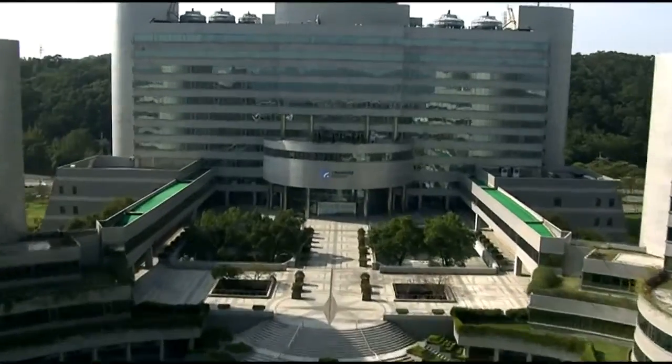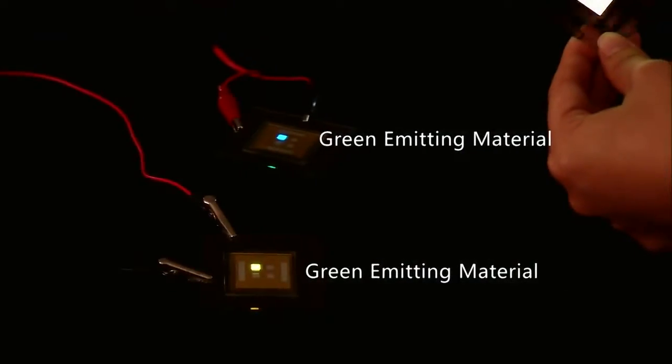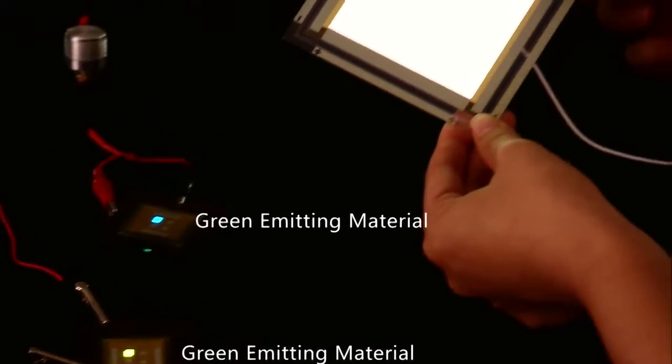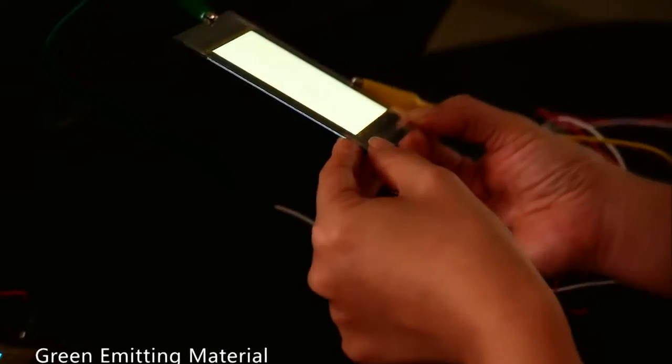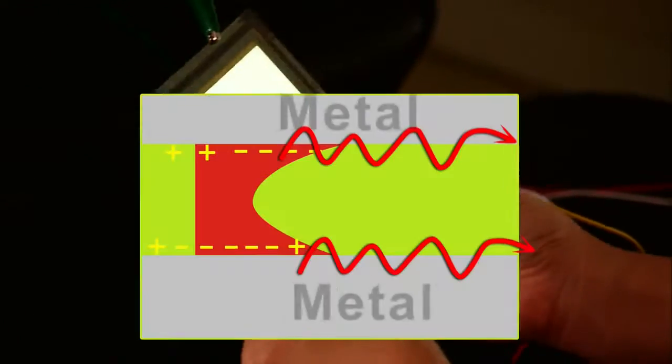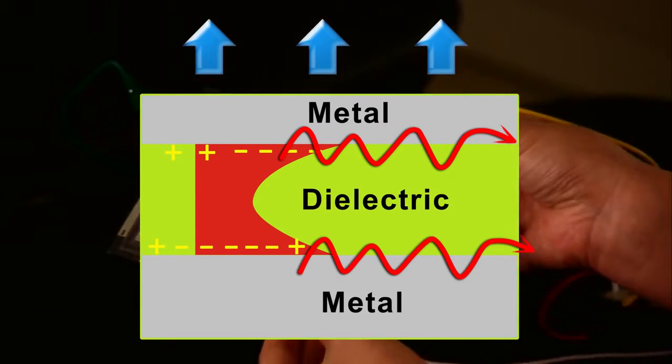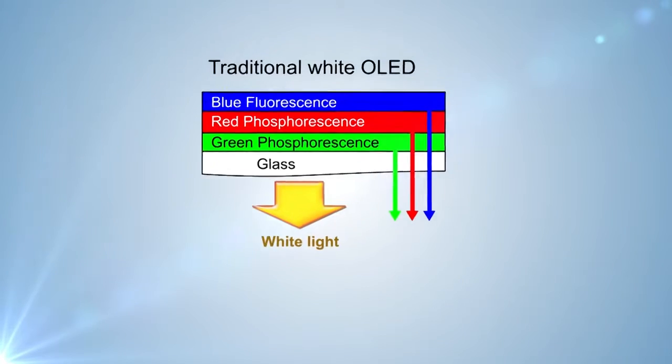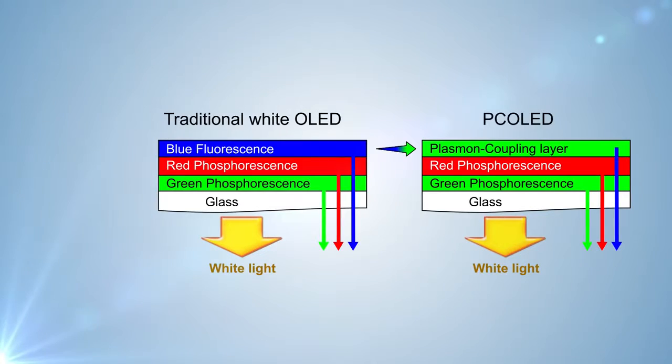In response to the blue light problem, ETRI developed a Plasma Uncoupled Organic Light Emitting Diode called PCO LED. This technology uses a double metal layer structure, which allows the two surface plasmon to be coupled to generate blue light directly from the green emitting material.